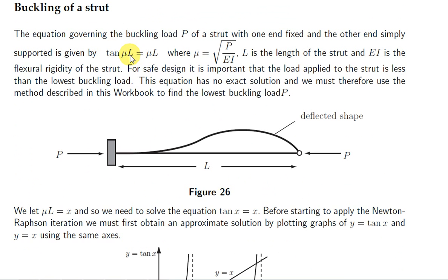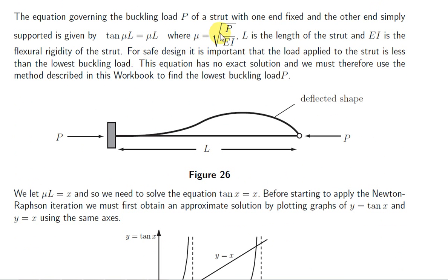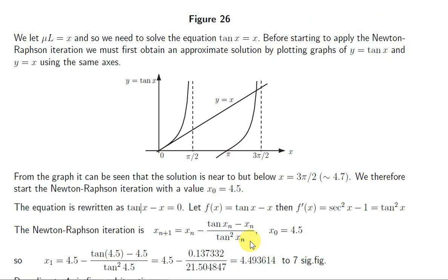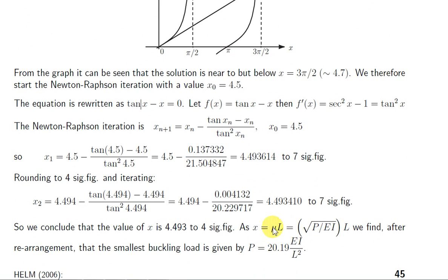So now if we go back to the equation for the buckling load, tan mu L equals mu L. So x was equal to mu L, our root P over EI times L. So that's our x, and we got our value for x, and we can rearrange that to get P, make P the subject of this. So P is the smallest buckling load that we require.